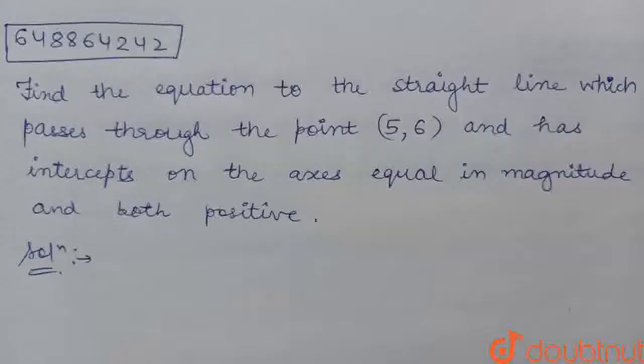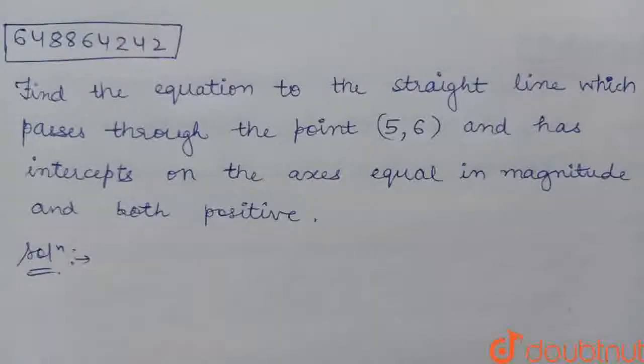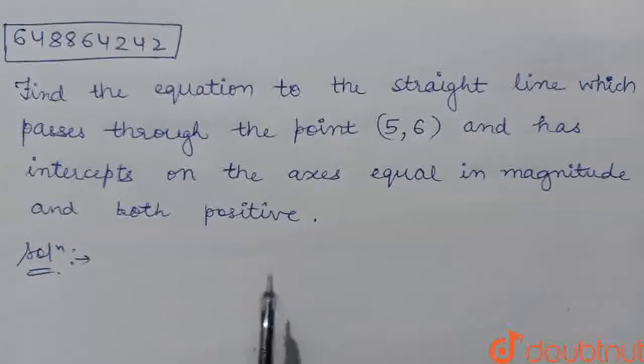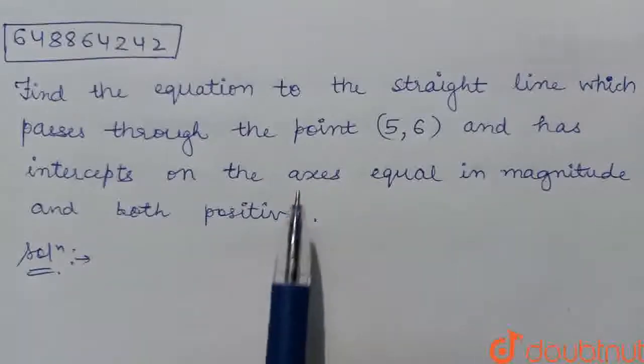Question given is: find the equation to the straight line which passes through the point (5,6) and has intercepts on the axes equal in magnitude and both positive. So we have to find the straight line equation passing through point (5,6) with intercepts equal in magnitude and both positive.